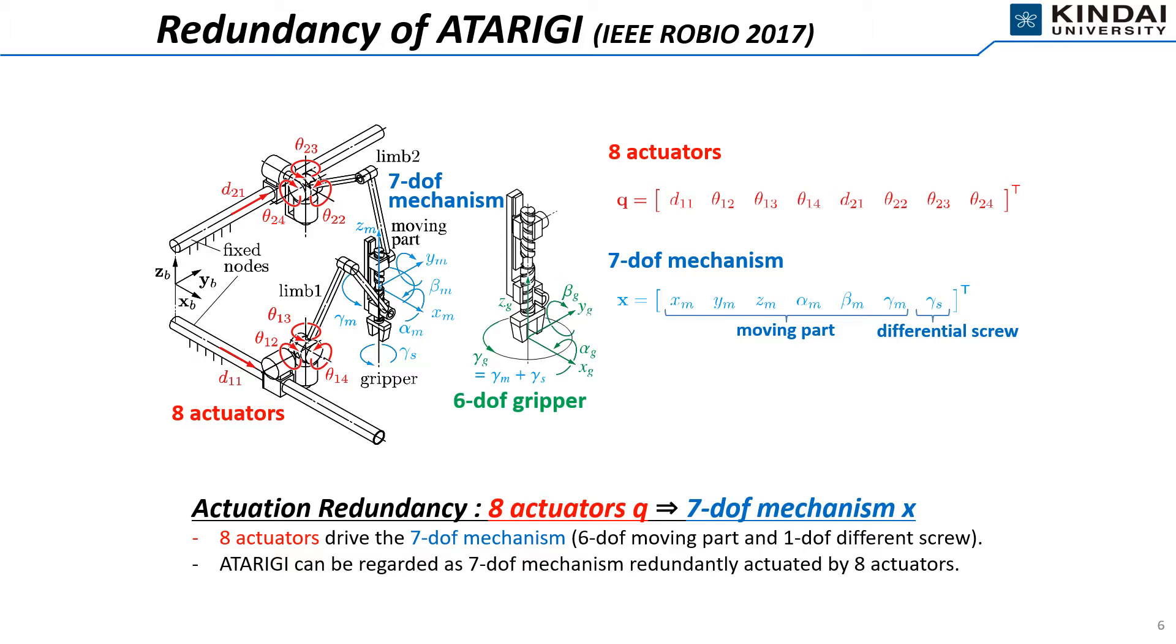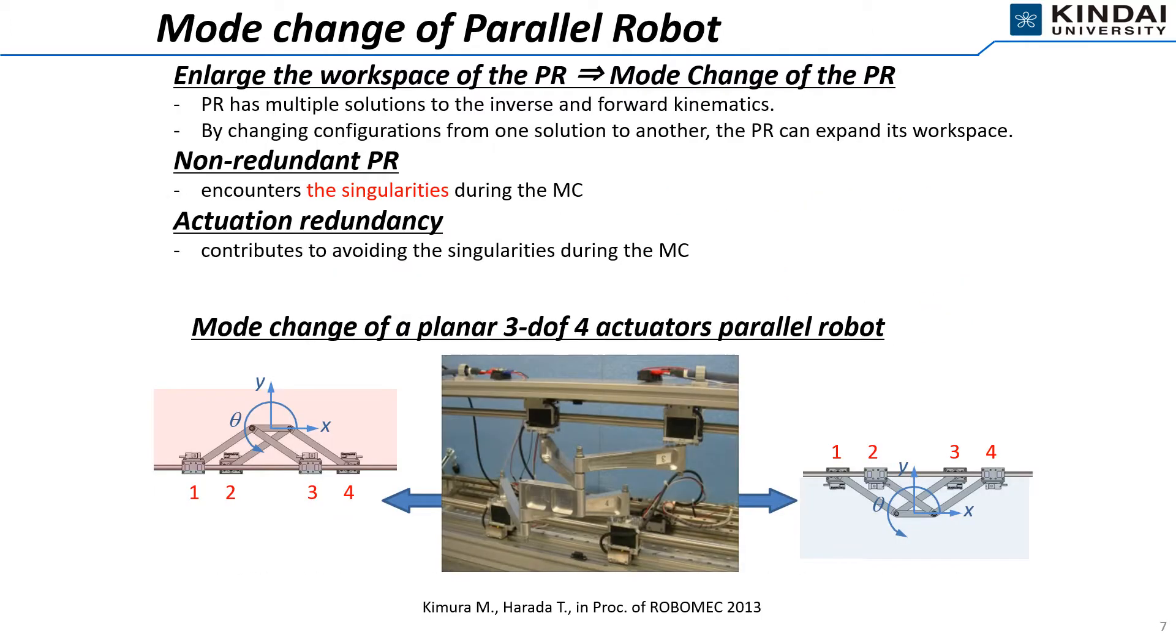Atarigi can be regarded as 7DOF mechanism, redundantly actuated by 8 actuators. Parallel robot has multiple solutions to the inverse and forward kinematics. By changing configurations from one solution to another, the parallel robot can expand its workspace. However, non-redundant parallel robot encounters singular configurations during the mode changes. The actuational redundancy contributes to avoiding the singularities during the mode changes.